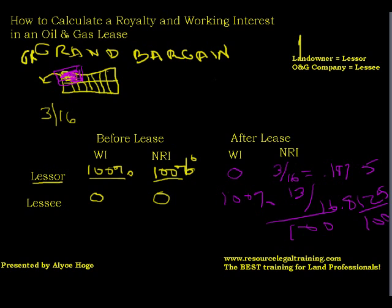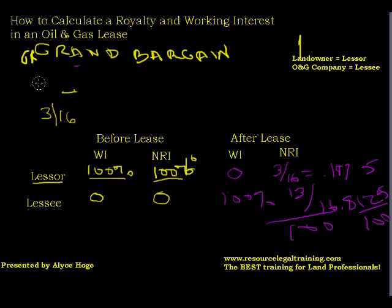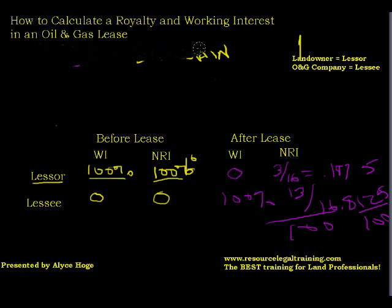We can keep doing this. We can do it with fourths — that means the lessor would own one-fourth and the lessee would own three-fourths. We could do it with fifths — one owns one-fifth and the remaining four-fifths belongs to the oil and gas company. So this works great if the lessor owns 100% of the property.